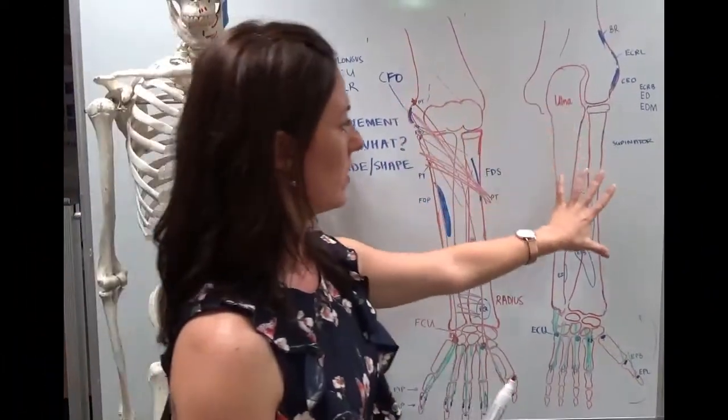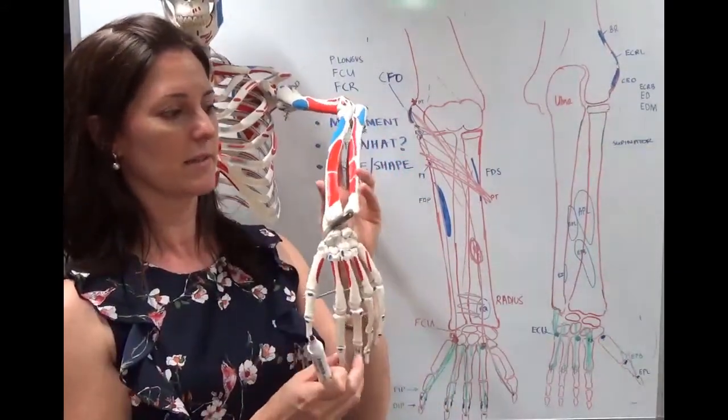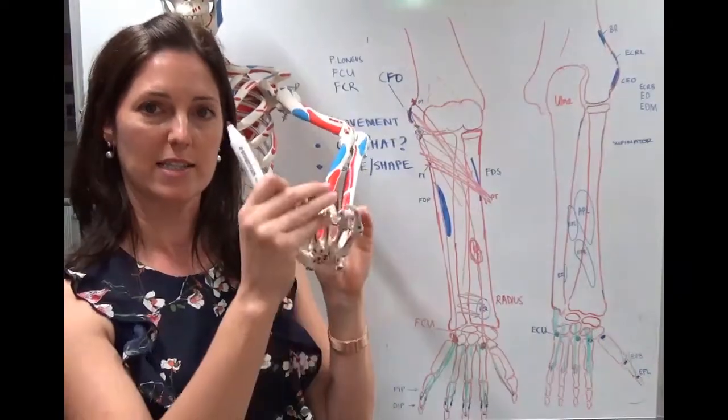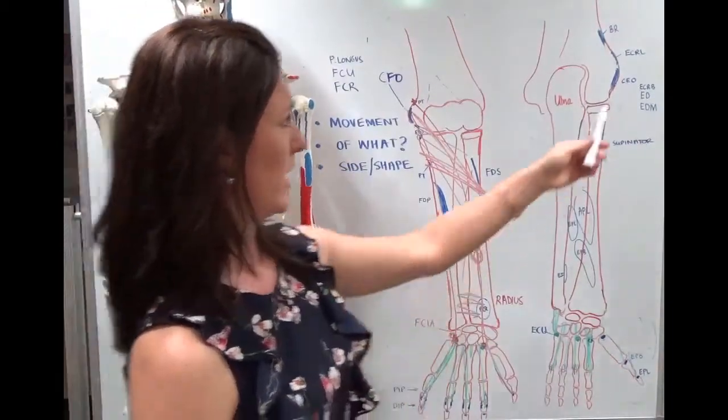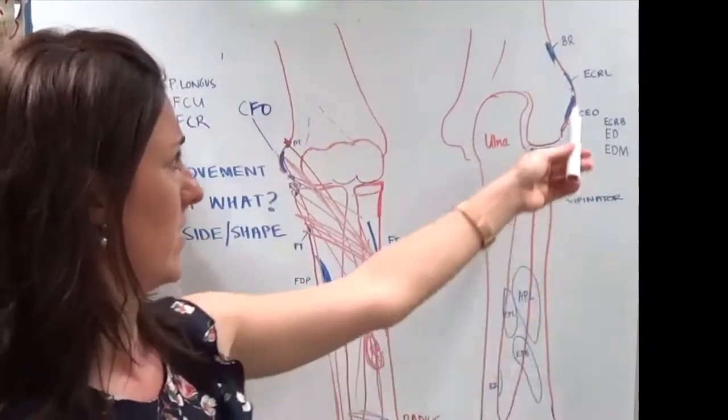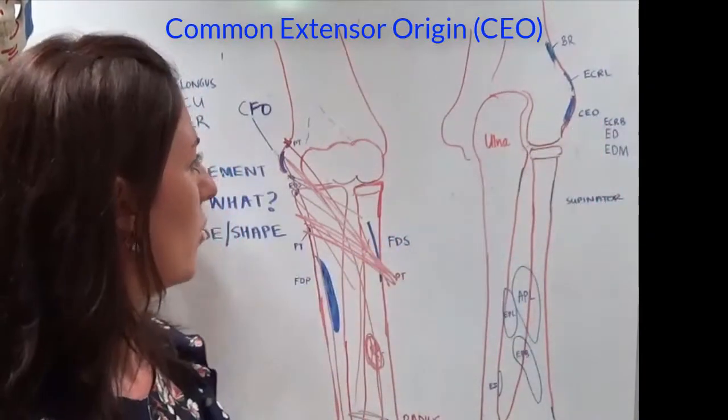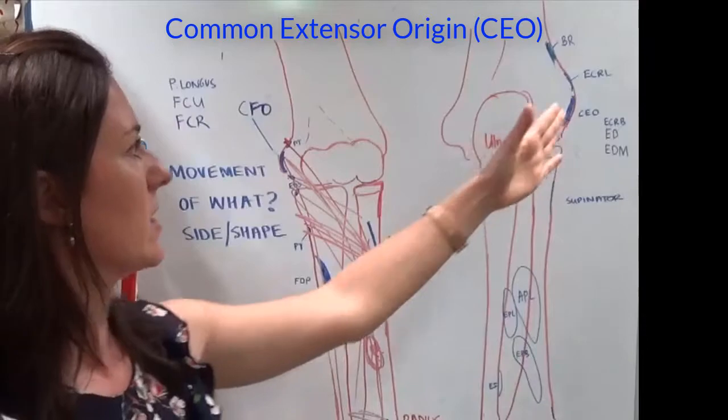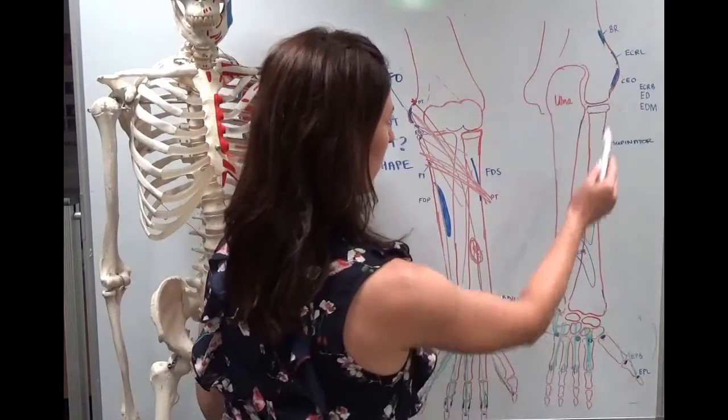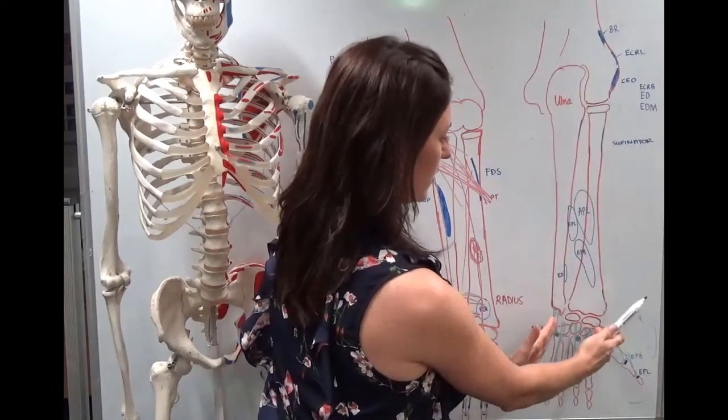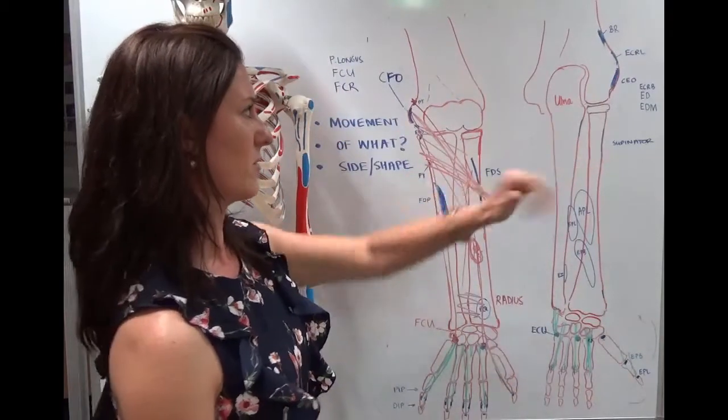So now if you flip that over, so we're on the dorsal side of the forearm. On the dorsal side, these muscles are going to be capable of producing extension of the wrist and fingers. So this time we're starting a lot of these tendons at the lateral epicondyle of the humerus, and this is known as the common extensor origin. You'll need to know which things make up that common extensor origin.